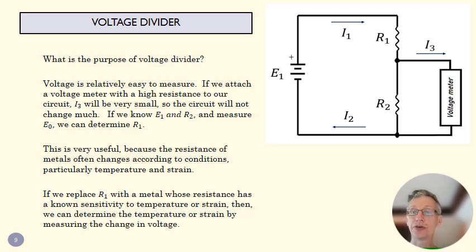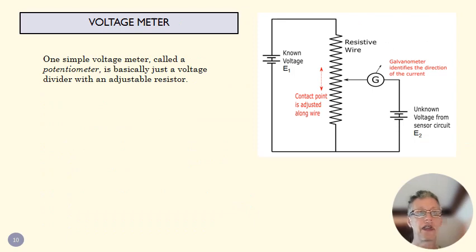We can figure out what the temperature or strain is by reading our voltage. And so that's why this is a really crucial kind of basic circuit for experimentation.